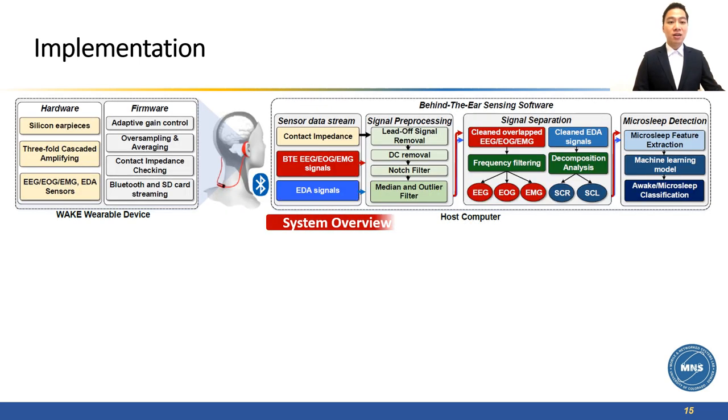This figure presents an overview of our system. Our hardware consists of a pair of silicon earpieces, attached with biosignal sensors, and 3CA circuits. On the firmware, we have the adaptive gain control algorithms and processing functions to digitalize sensor signals and stream them to the software on a host device. The sensor data is then processed and decomposed into separated components. They are fed into our machine learning model to classify microsleep events.